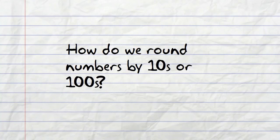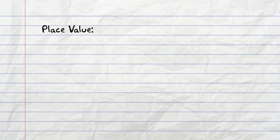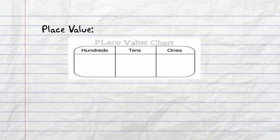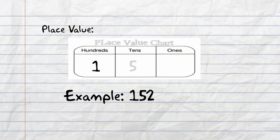How do we round numbers by tens or 100s? Let's take a look at putting 152 into a place value chart. 152 is made up of 100, 5 tens, and 2 ones. This is a skill that will be important for rounding.